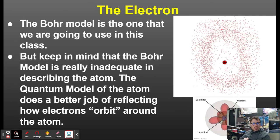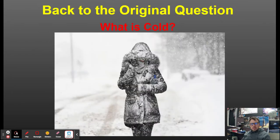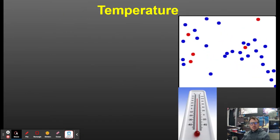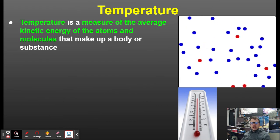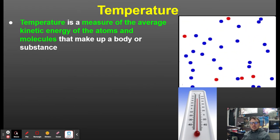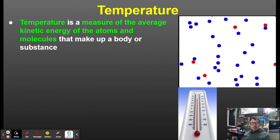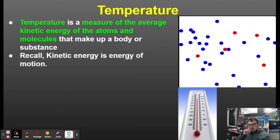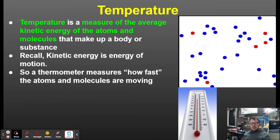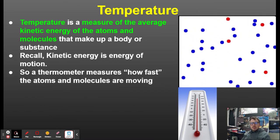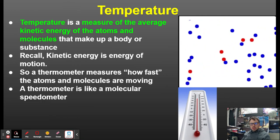The quantum model of the atom does a better job of reflecting how electrons orbit — it has to do with probability in a certain area at the quantum level. Temperature is the measure of the average kinetic energy of the atoms and molecules that make up a body or substance. Kinetic energy is just the energy of motion, so a thermometer measures how fast the atoms and molecules are moving — it's like a molecular speedometer.